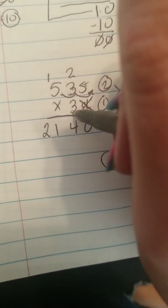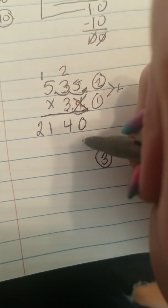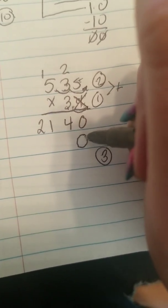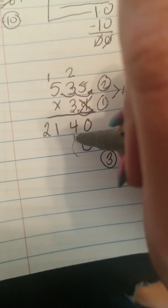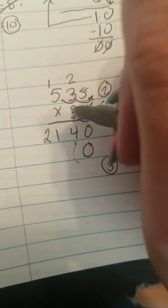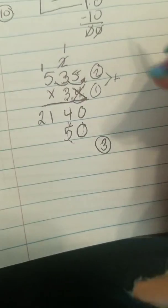I am moving over one place value, so I need to put a placeholder right here. That's saying I'm moving over to my tenths place now. 3 times 5 is 15, so I'm going to put a 5 and carry a 1. 3 times 3 is 9 plus 1 is 10. So I'm going to put a 0 and carry a 1. 3 times 5 is 15 plus 1 is 16. So I'm going to drop a 16 right here.